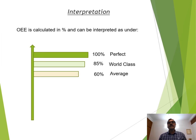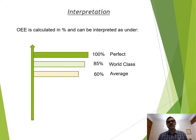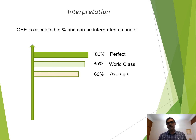How do I interpret this? If OEE is 100%, it is perfect. Even 85% is considered world class. Getting an OEE of 60% is considered average. Below 60% — or below 50% — is considered poor operation. If OEE is coming below 50%, it is a poor operation and we need to immediately take some actions.